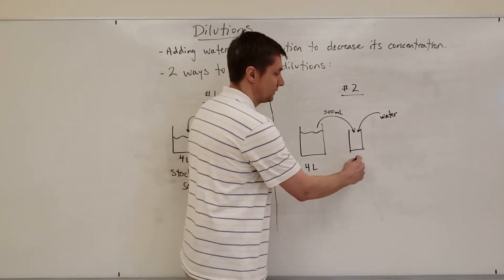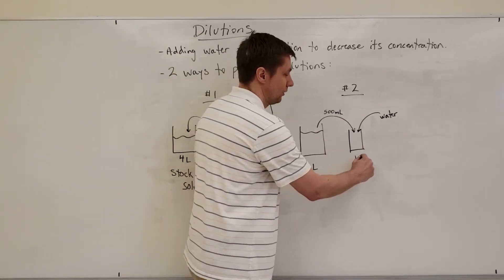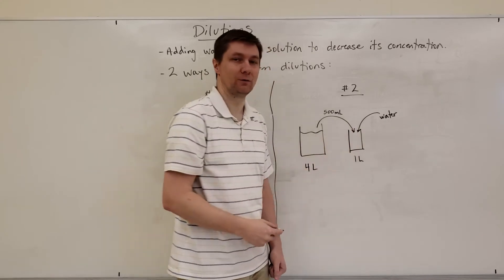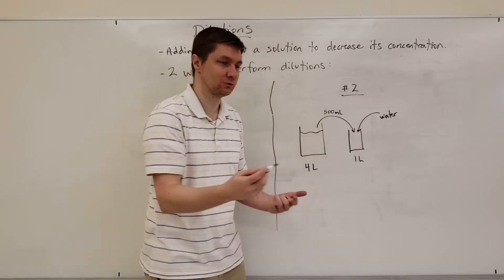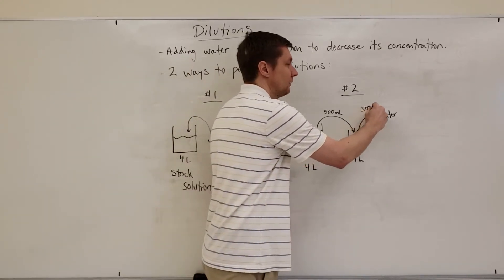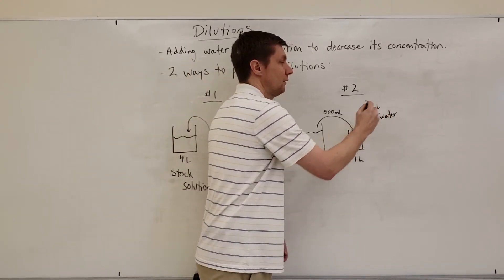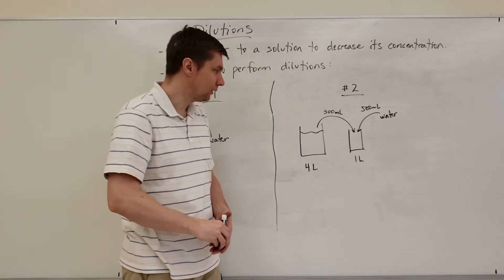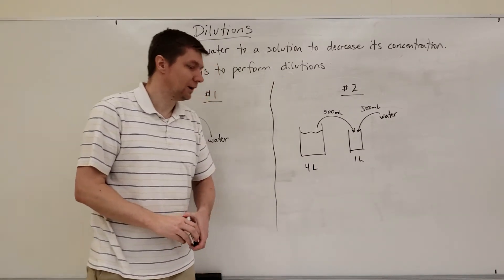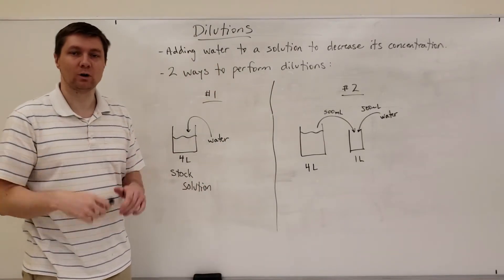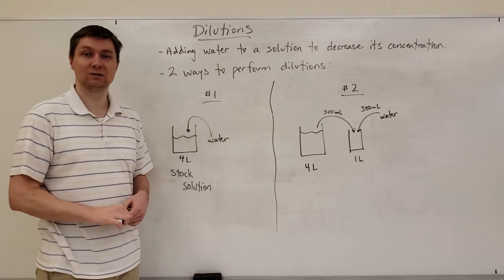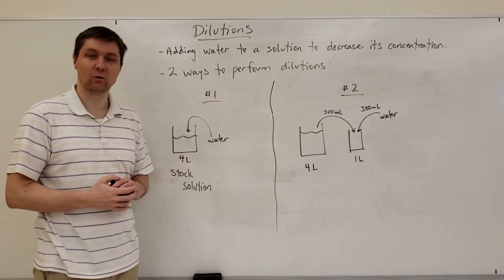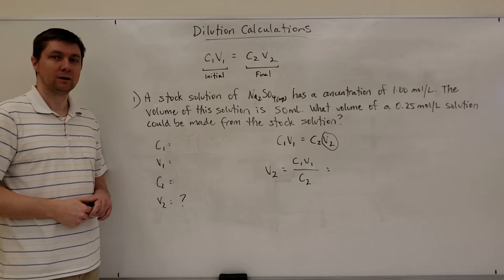Let's say we're bringing this up to one liter. If I'm adding 500 mL of the stock solution, I would also be adding 500 milliliters of water to that. In the next clip, we're going to take a look at how to do some of these calculations and the formula that we use for it.